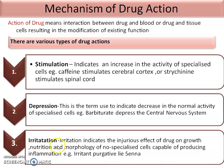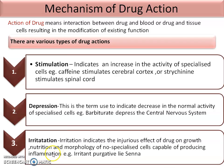The third drug action is irritation. Irritation indicates the injurious effect of the drug on the growth, nutrition, and morphology of non-specialized cells, capable of producing inflammation. That is, it produces inflammation to achieve its result. Example: irritant purgatives like Senna.